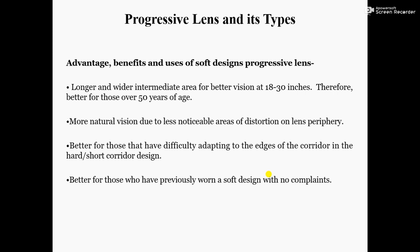Advantages and benefits of soft design progressive lenses: number one, a longer and wider intermediate area for better vision at 18 to 30 inches, therefore better for those over 50 years of age. Patients whose age is more than 50 years will find the soft design progressive lens more useful.